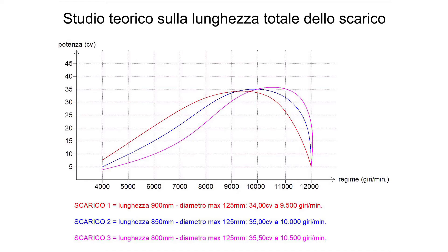By shortening the muffler, the engine settles on a higher ratio, and it can perform better, although not as linear as the shortening. In fact, by taking the 900mm one, we have 34hp at 9,500 rpm; the 850, 35hp at 10,000; the 800, 35hp at 10,500. We see that the tune range increases linearly. On the other hand, the peak power increases not linearly, and at the delivery expense.